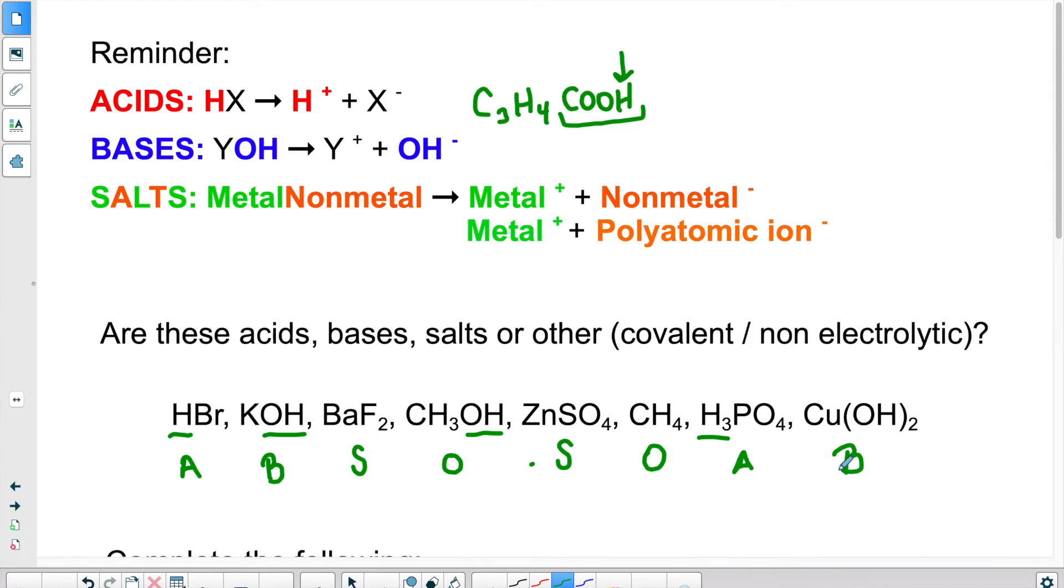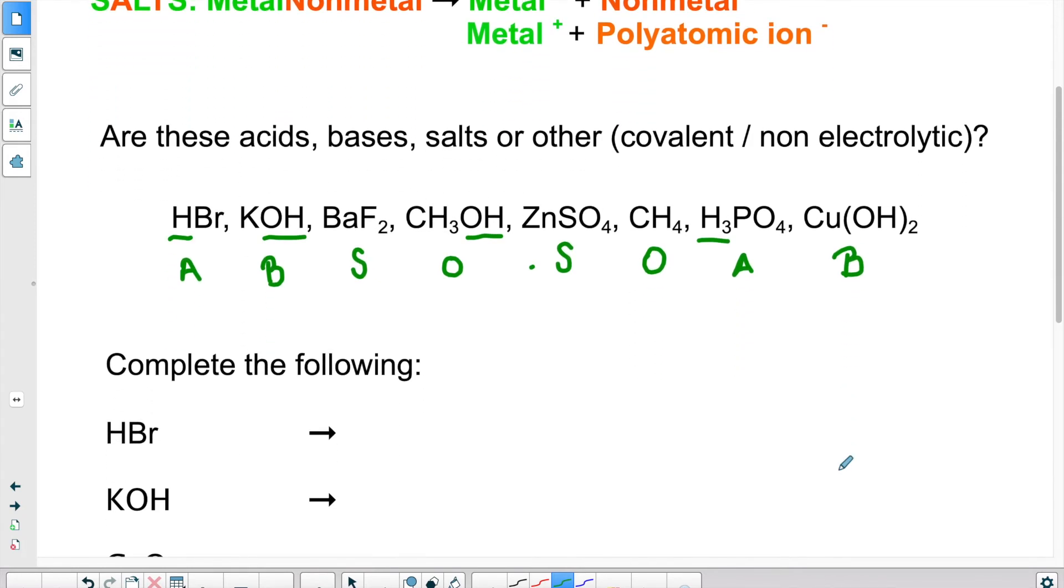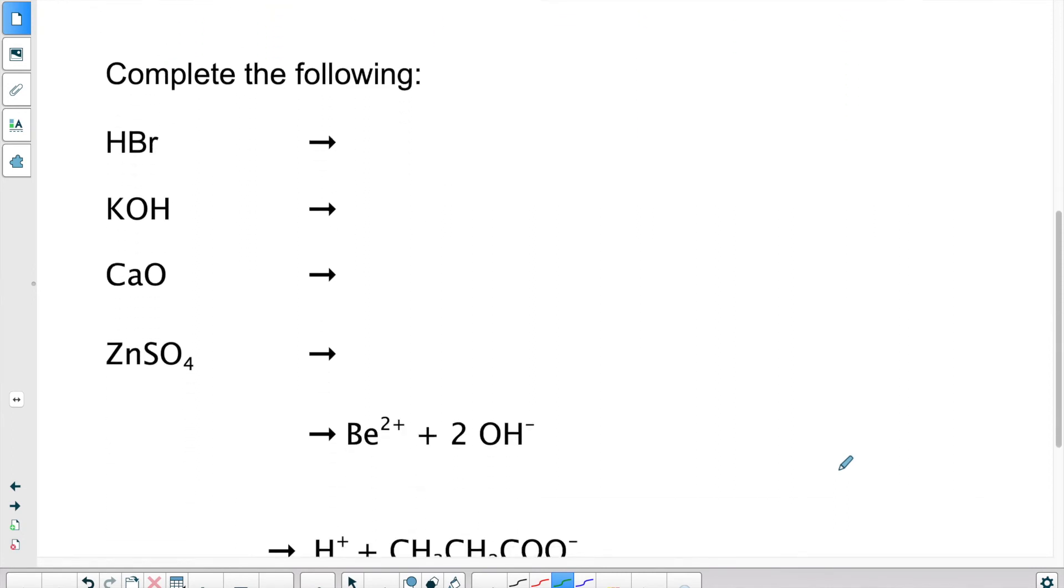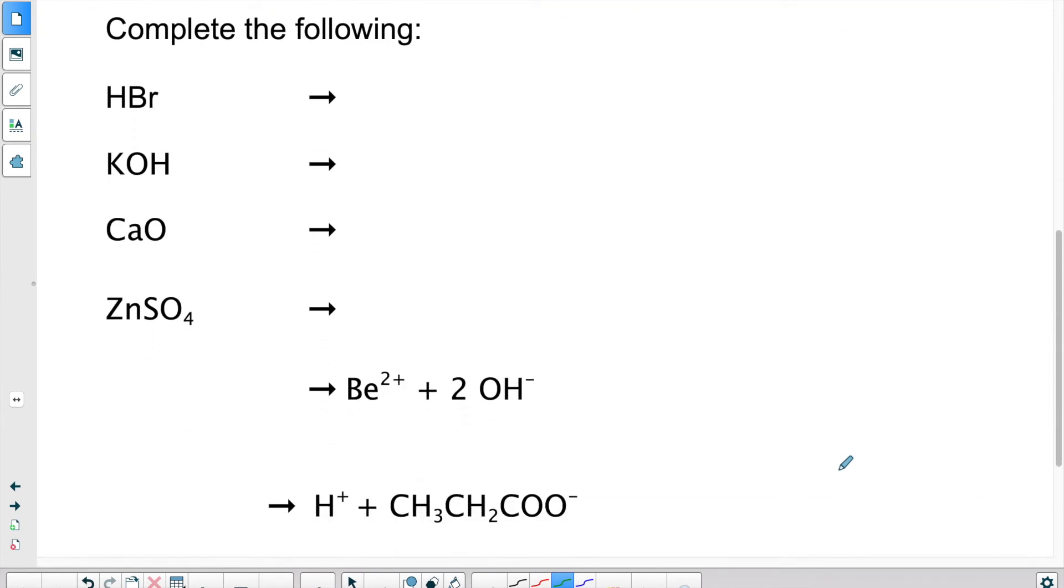Next, if we look at equations. Let's say you were given these equations and you were asked to complete them or find the missing parts. What should you do? So let's look at the first one. We have something that starts with an H. So we have an acid. We know that an acid will split into H+ and the rest. So the first thing you should be writing, knowing that this is an acid, automatically H+ will get produced.